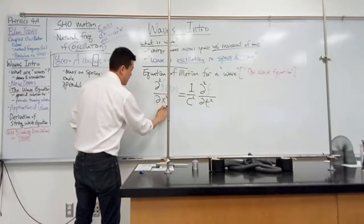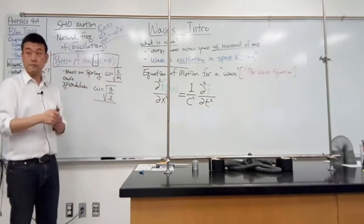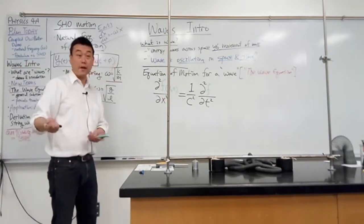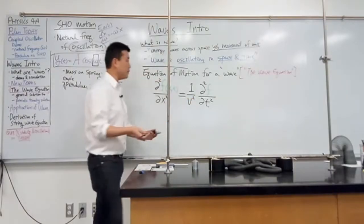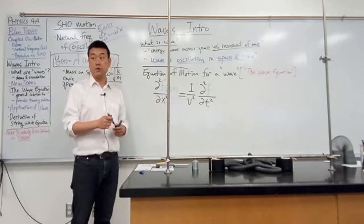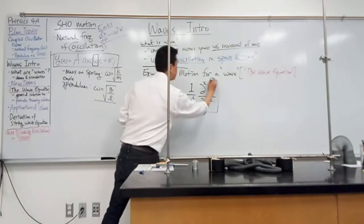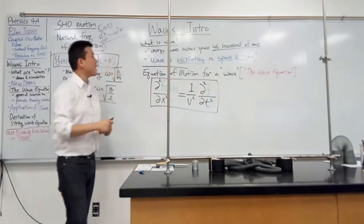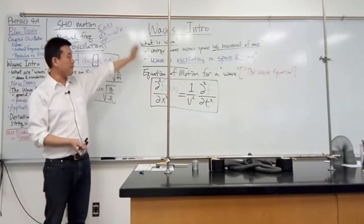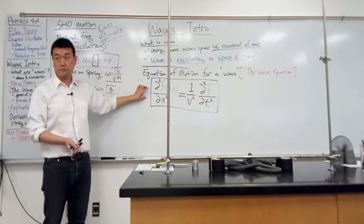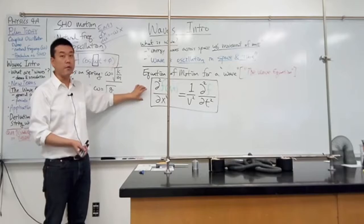What unit does that V have? Meter per second — it has a unit of velocity. So let me write it as 1 over V squared, and let's see in what sense this is the velocity of whatever. This is what we call the wave equation. I was hesitant to define what a wave was, but we could say: a wave is a function that satisfies this equation. By the way, this is not the only wave equation, but this is one of them.